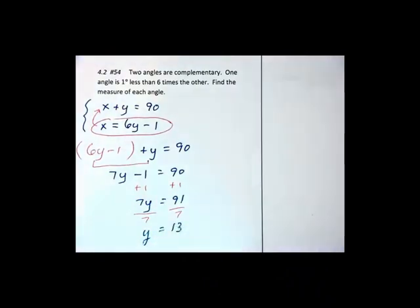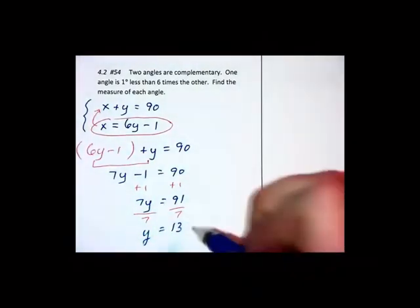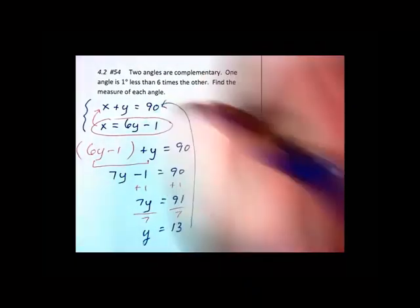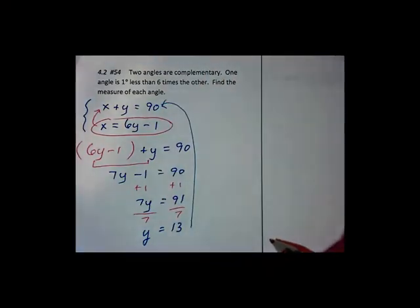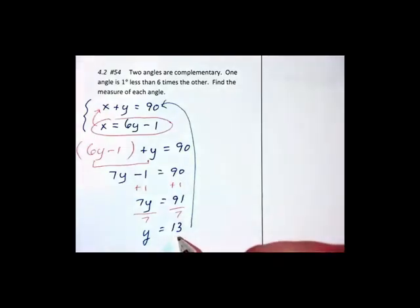Now we're looking for two angles and judging from my top equation, together they add up to 90 degrees. So 13 plus what makes 90? Subtracting the 13 I get 77.